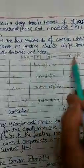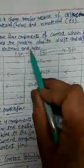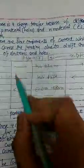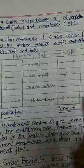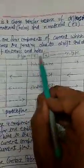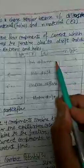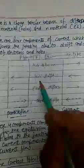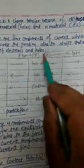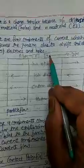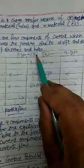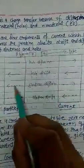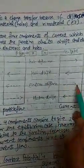Electrons will diffuse from N to P because N has a majority of electrons and they are in the minority on the P side. Since current is always opposite to the direction of electron flow, the electron diffusion current flows from P to N as well. So both hole diffusion current and electron diffusion current flow from P to N.